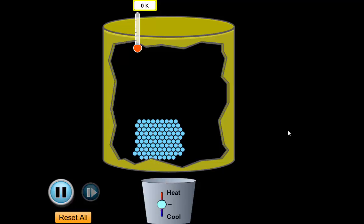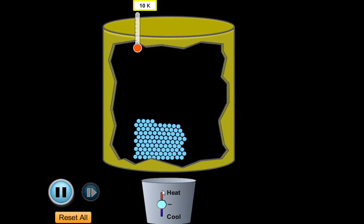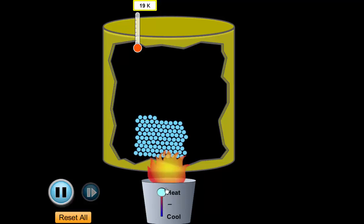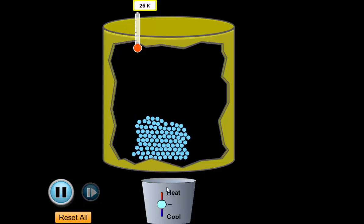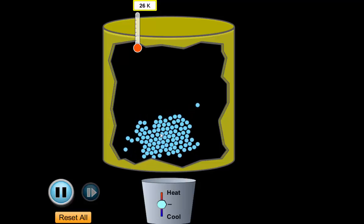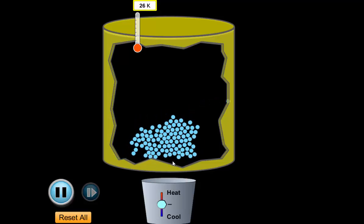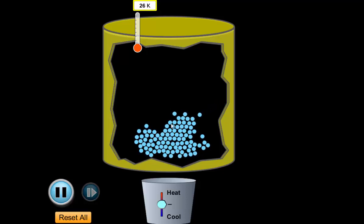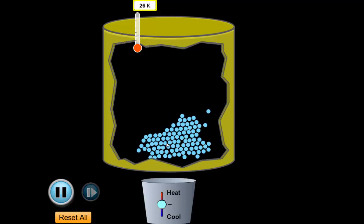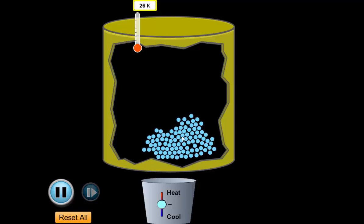Now let's heat that back up, and we'll see the particles start to move — all the way back to 10 Kelvin. It's still solid because it's locked in position. If I heat it up a little bit more, you can see the particles are actually starting to shift around. They're not sticking together very well. I've changed it from a solid into a liquid, and these particles are now free to shift around.